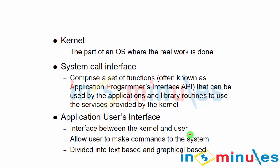Going beyond the architecture, the kernel is where the real and majority of work is done. The system call is basically the API we work with. The Application User Interface is an interface between the kernel and the user, allowing users to make commands to the system, and it is divided into text-based and graphical options.